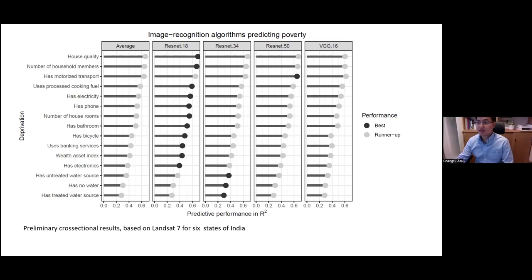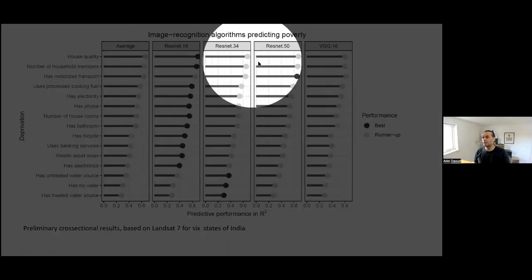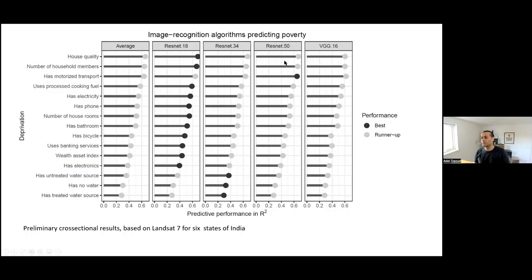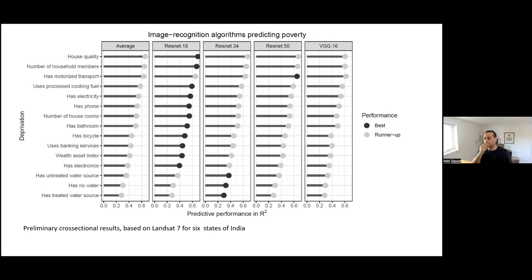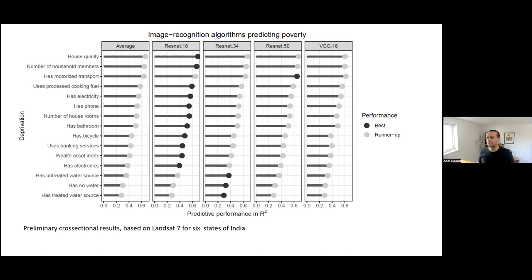Two noticeable results stand out. First, ResNet 18 — a less complex model — performs comparably to or better than more complex architectures. One hypothesis is that ResNet 50 requires more data to learn the complex joint distribution, so you do better with a simpler model. More complex doesn't always mean better. Second, housing quality and number of household members are features of the household itself rather than individuals, and these tend to be more visible from the sky — or at least correlate highly with features that appear from above.